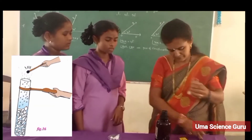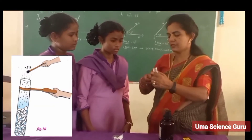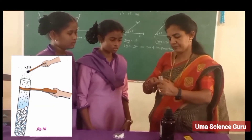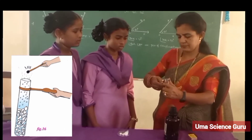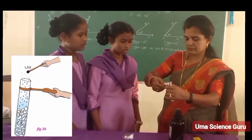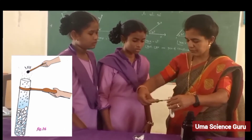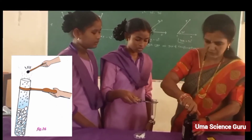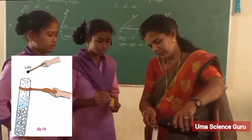Use the test tube holder to hold the test tube. Now pour the diluted hydrochloric acid into the test tube until the eggshells completely sink.